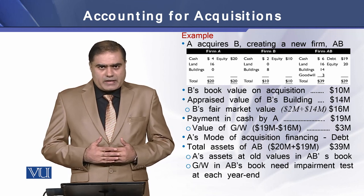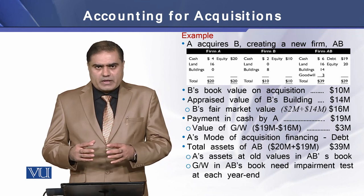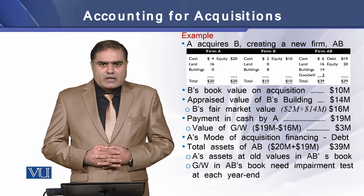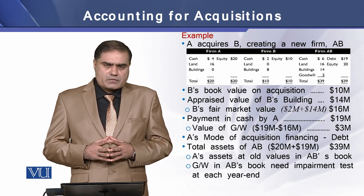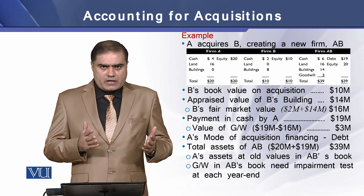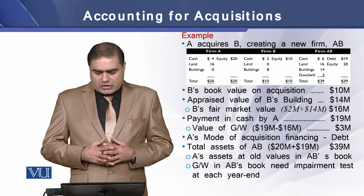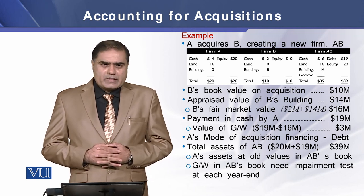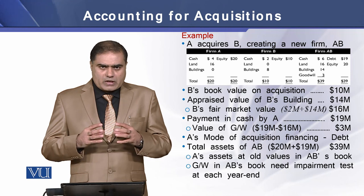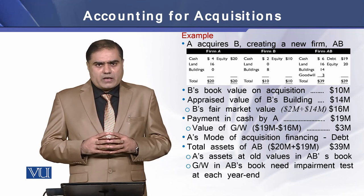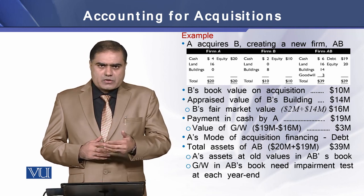A makes payment in cash to acquire these $16 million assets at $19 million, which means there is goodwill of $3 million. This $3 million is the difference between the acquisition price of $19 million and the fair market value of B's total assets of $16 million. The mode of payment is through debt, so company A is using debt of $19 million to make a cash payment to the shareholders of firm B.